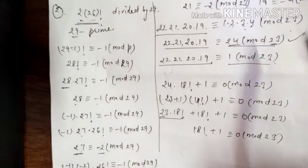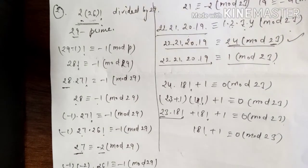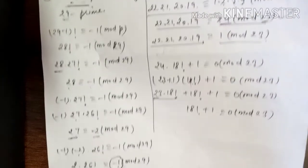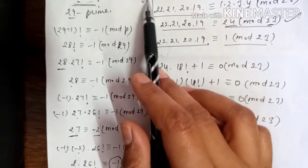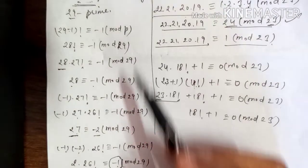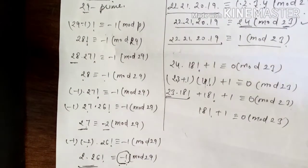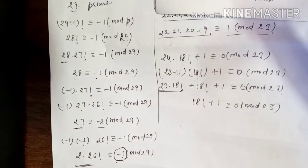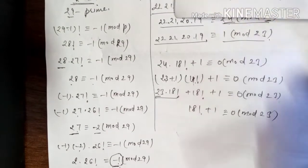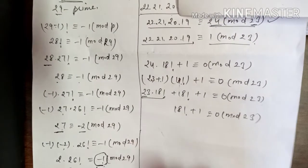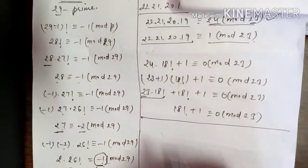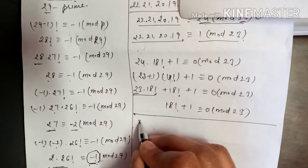Otherwise if the number is in lakhs or thousands, doing direct division is a very long and critical process. So whenever you need to divide by a prime number, apply Wilson's theorem and your result comes within a few seconds. This is important from a competition point of view. Your book also has another proof, but this method is very easy.